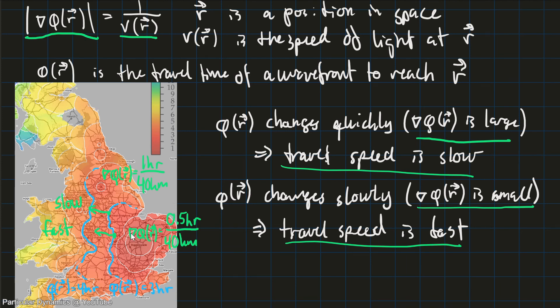Another observation we are making is that phi of r defines what we call wavefronts. Wavefronts. So wherever phi of r is constant, it defines wavefronts of light.